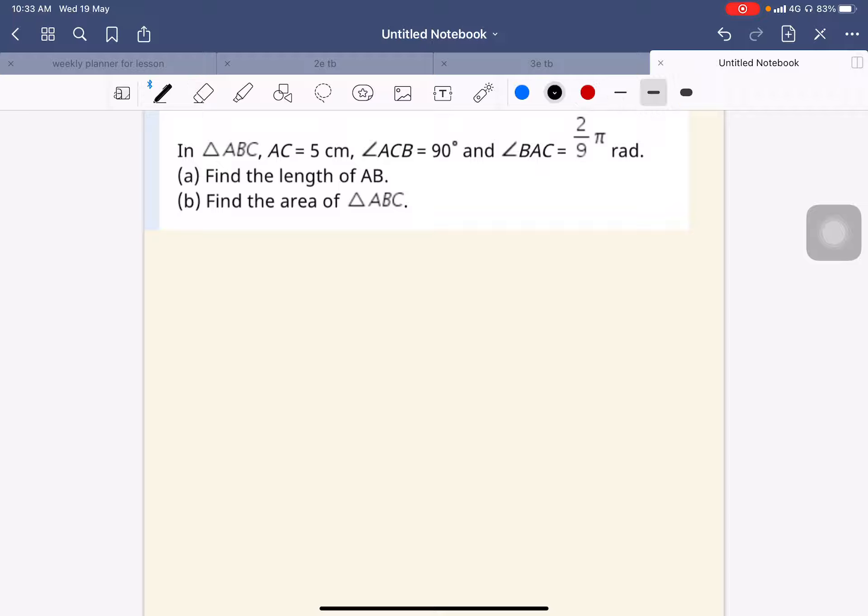Let's start off with drawing the triangle first. So I have a right angle triangle where angle C is 90 degrees. Then AC is 5. BAC is 2 over 9 pi radian.